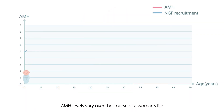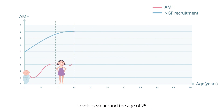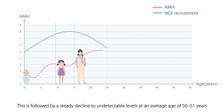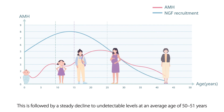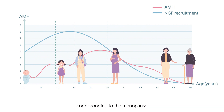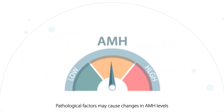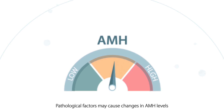AMH levels vary over the course of a woman's life. Levels peak around the age of 25, followed by a steady decline to undetectable levels at an average age of 50 to 51 years, corresponding to the menopause. Pathological factors may cause changes in AMH levels.